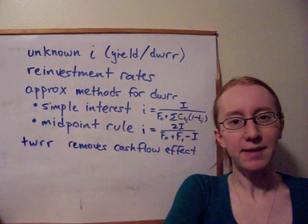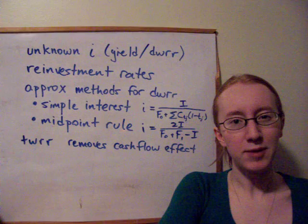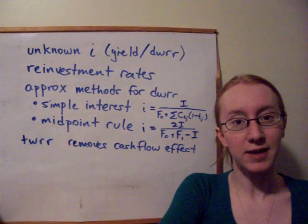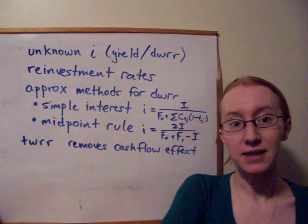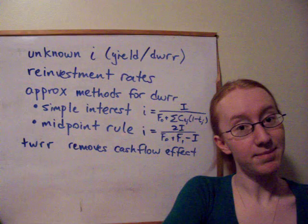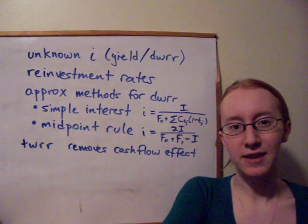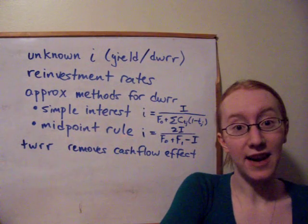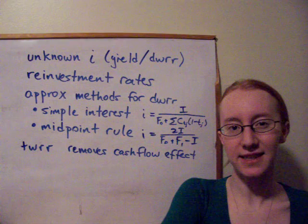After that we looked at briefly an example of reinvestment rates, and that's just some situations where maybe there are two different interest rates at play in a certain situation. So maybe interest is being paid to a lender at a certain rate, but they can only reinvest that income at maybe a lower rate in the markets. So overall the lender's yield rate is going to be slightly less than they're actually getting from the loan because they can only reinvest the proceeds at a slightly lower rate.